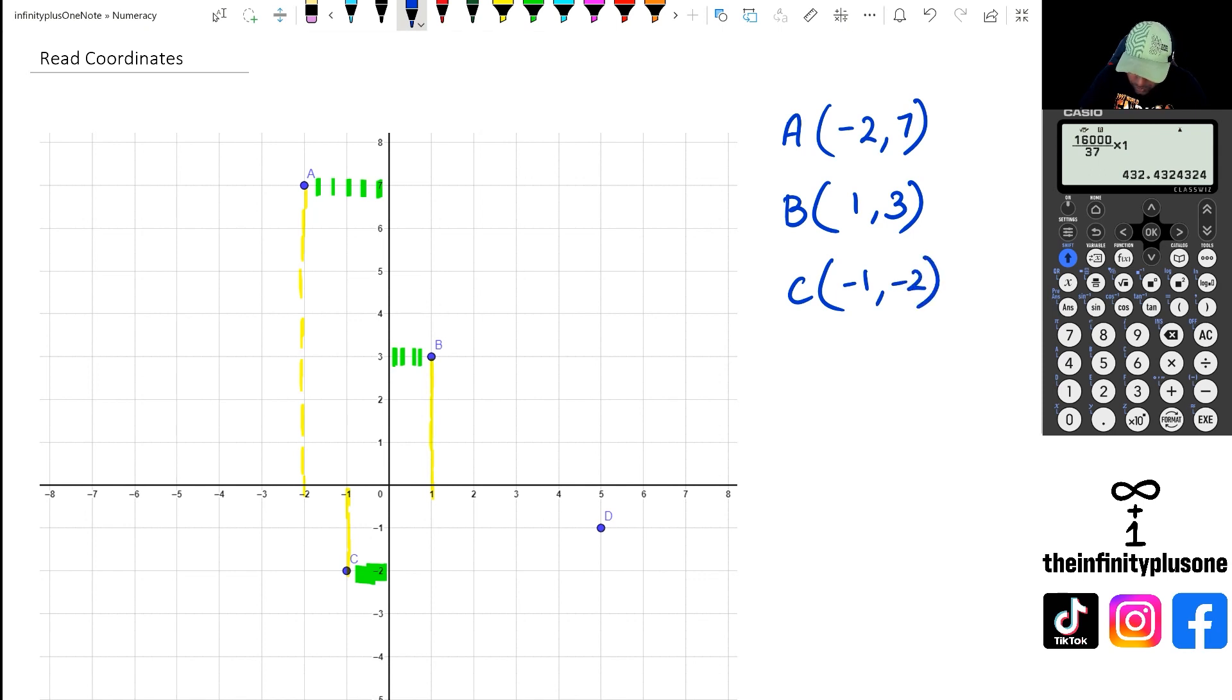And finally looking at point D, we are looking at positive 5 for the x-axis, and of course we're looking at negative 1 for the y-axis, so point D is going to be positive 5 and negative 1.